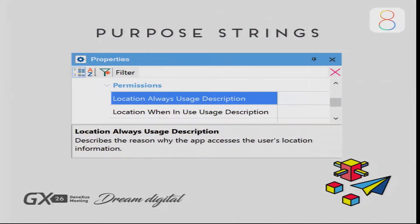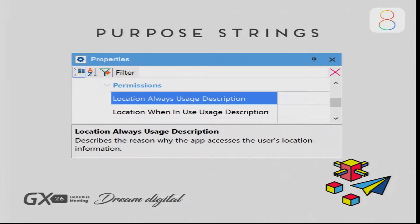The following interesting novelty of iOS 8 is the descriptions for the use of the APIs. It is mandatory for the app to include at the time of compilation a description of why the app is going to use the information. For example, it describes the reason why the app accesses the user's location information. What we did in GeneXus 15 was to add properties in the main object where you can add this description.